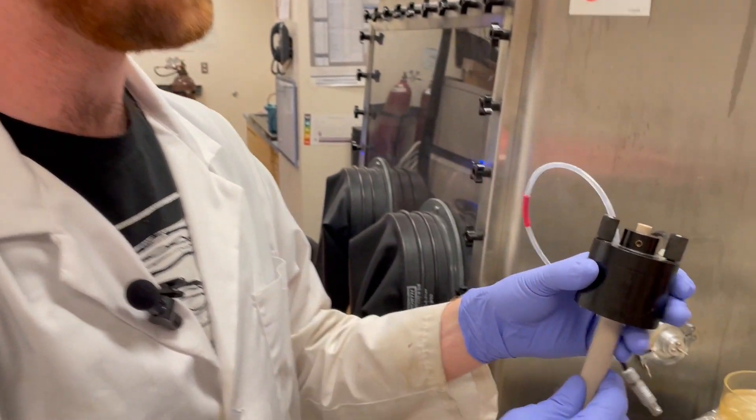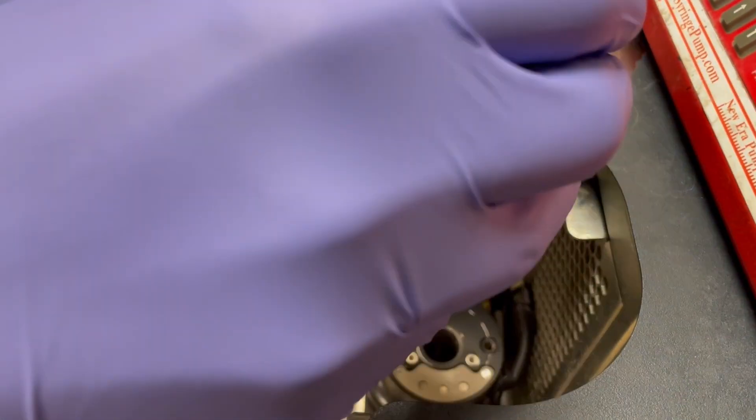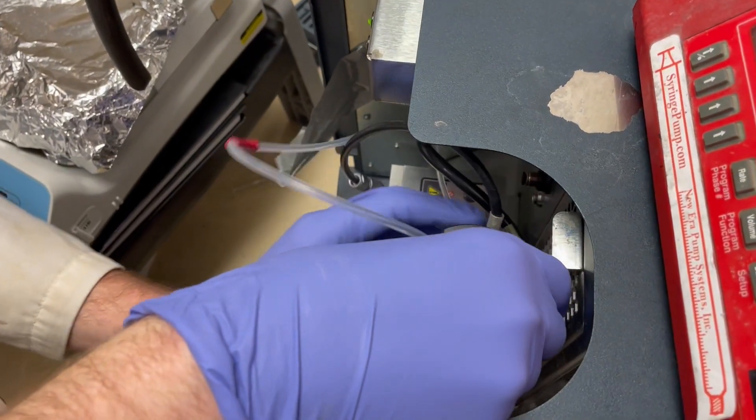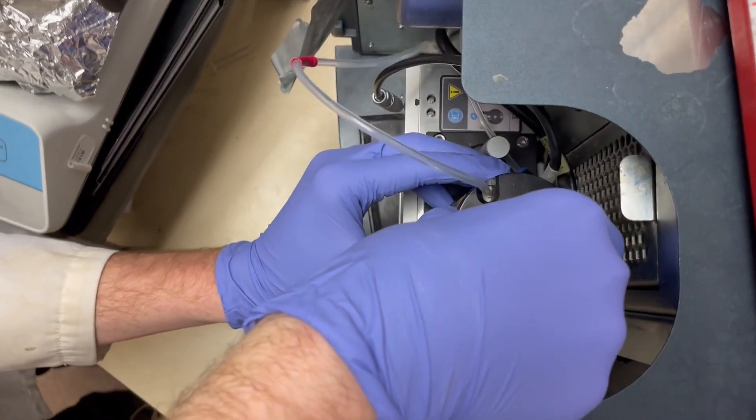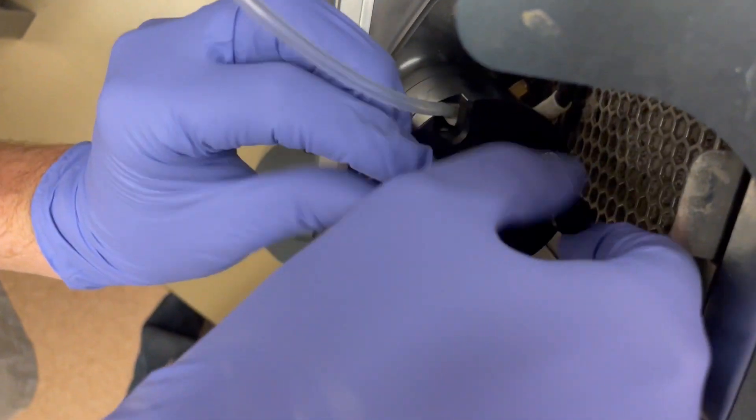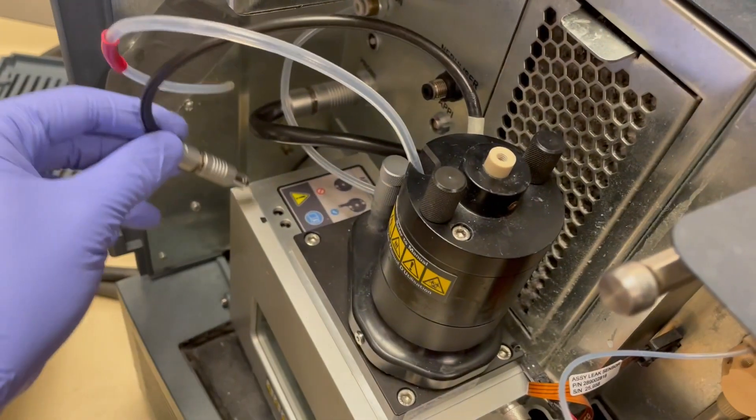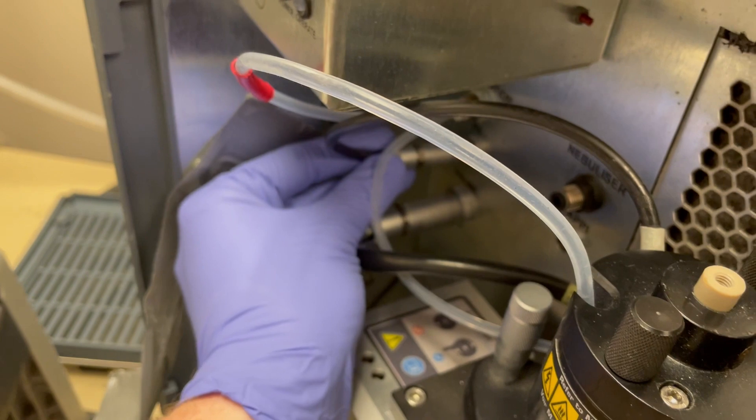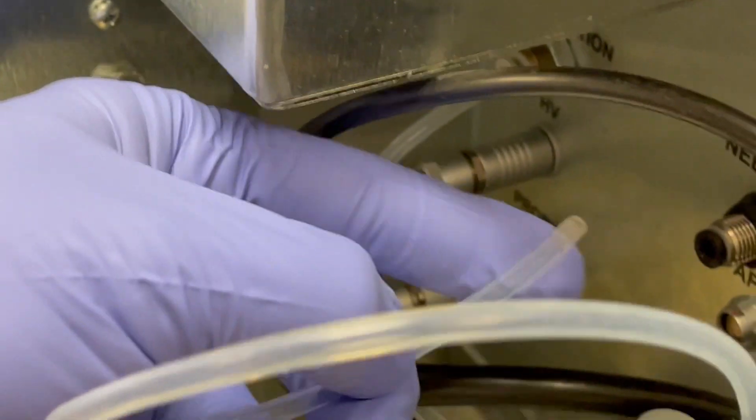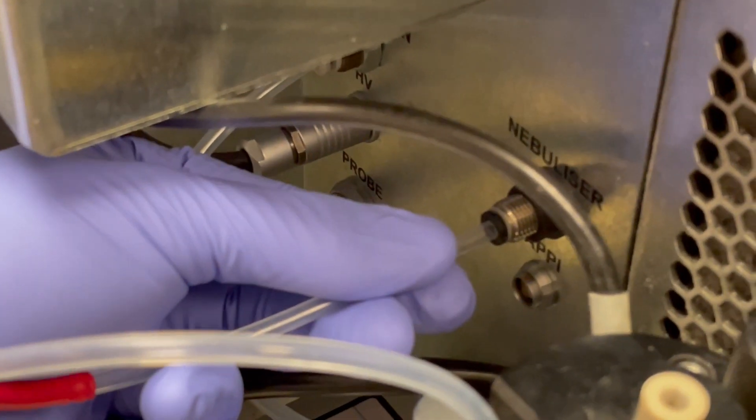Now that we've got our source reassembled, we need to put it back into the spray chamber of the instrument. Again, being very careful that we go straight in so we don't poke the tip into anything. Once we're set in place, screw both of these screws back in. We're going to reattach the power source and reattach the tube of the gas. This is just what's called a shark bite fitting. It just needs to be pushed in hard and it will take.